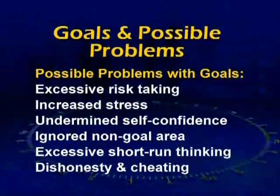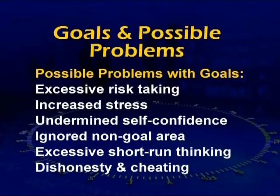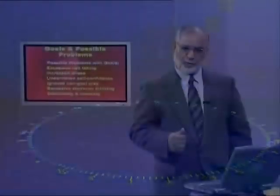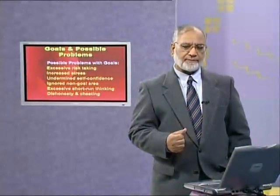Another issue regarding goal attainment that we should keep in mind: what could be the possible problems? There could be excessive risk — some goals are for the future and there is a lot of risk and changes in market conditions. There could be increased stress as people work under stress. There could be short-run thinking and short-focused thinking. And the last point: there could be dishonesty and cheating. When dishonesty and cheating enter goals and goal attainment, the goals, goal performance, goal achievement, and end results will be badly affected.